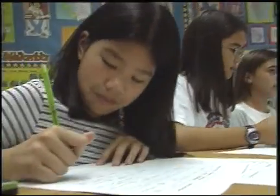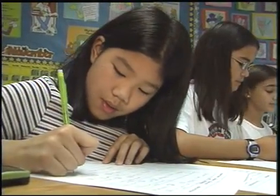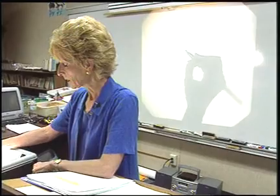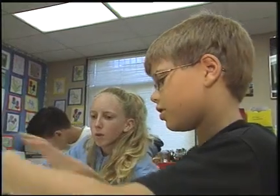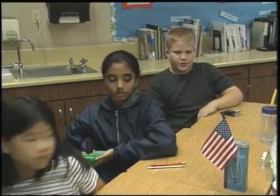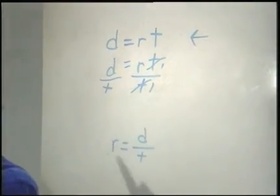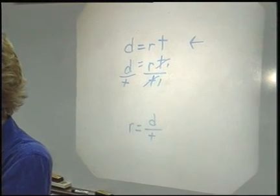Finally, Betsy demonstrates how to solve for each of the variables in the rate formula, showing how this process can simplify problems. Using only variables: distance equals rate times time. So if you're finding rate in the future, you can just do this, which is a little bit quicker — you're doing exactly the same thing, but you save a step.